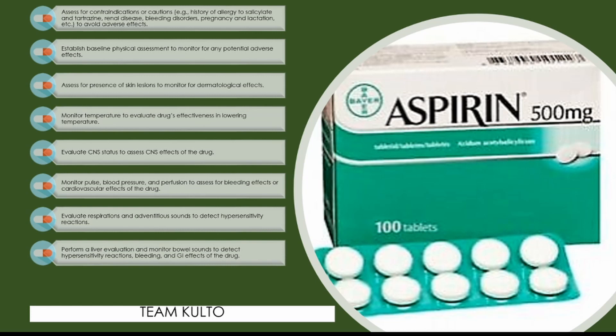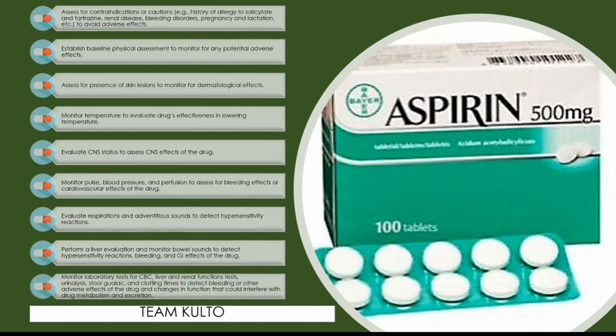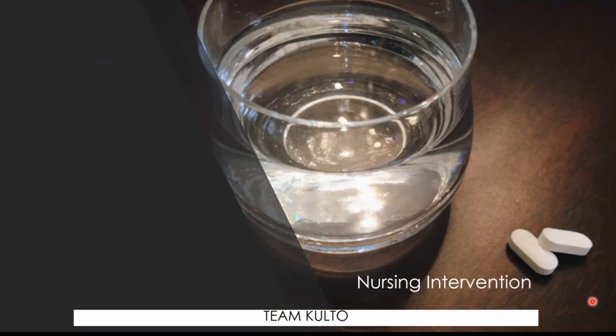Perform a liver evaluation and monitor bowel sounds to detect hypersensitivity reactions, bleeding, and GI effects. Monitor laboratory tests including CBC, liver and renal function tests, urinalysis, and clotting times to detect bleeding or other adverse effects and changes in function that could interfere with drug metabolism and excretion.